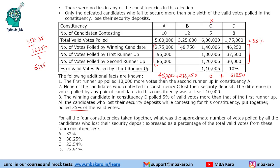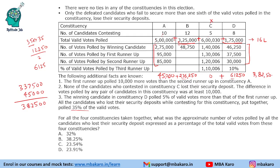Can we approximate the combined value? Total votes across all four constituencies: constituency A is 5,00,000; D is 1,75,000; that is 6,75,000, plus B gives roughly 16 lakhs total. The candidates losing their deposits total: B contributes 2,76,250; D contributes 61,250 — summing to 3,37,500. Adding A's 45,000 gives 3,82,500. Dividing 3,82,500 by 16,00,000 we get approximately 23.9%.